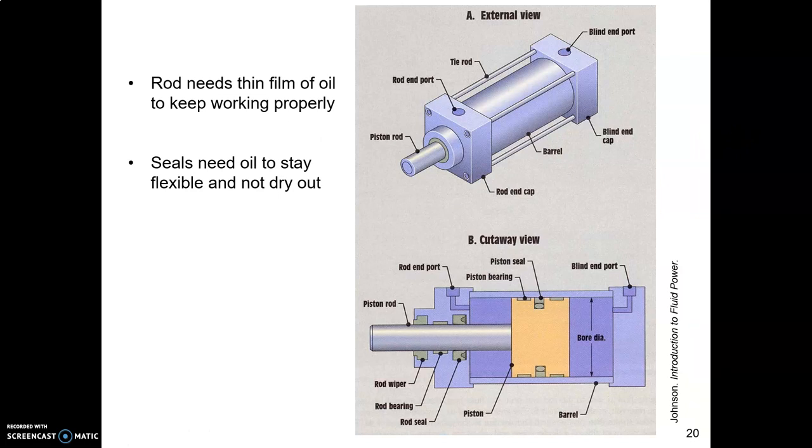Oil does a lot of work in this system. Besides being pressurized and making our actuators rotate or extend and retract, they make everything work right. As the rod goes in and out of the cylinder, it needs to be coated with a thin film of oil so that you don't have metal to metal basically. So everything is suspended on this film of oil and nothing ever touches anything. The only thing that gets touched is oil molecules. Then all these seals inside the cylinder, they will dry out if we don't keep oil on them. So oil, not only do we use seals to keep the oil in and the dirt out, but we use oil to keep the seals sealing.